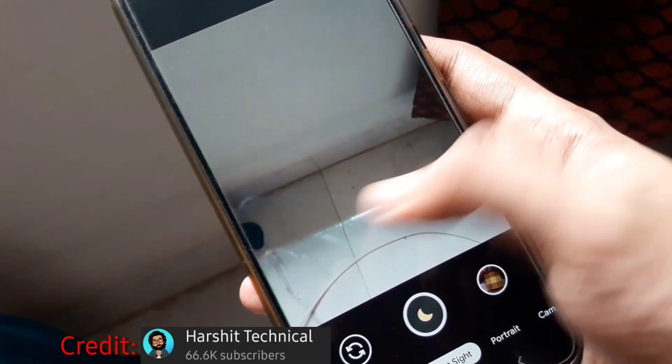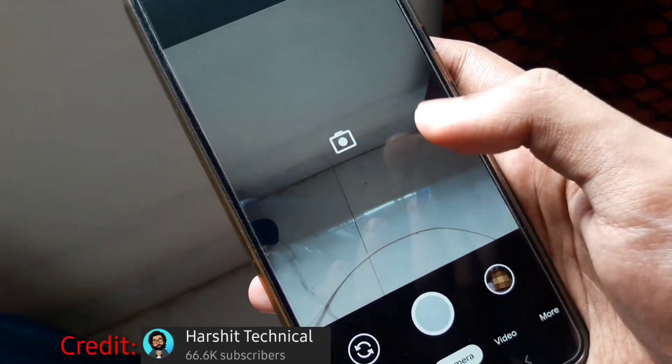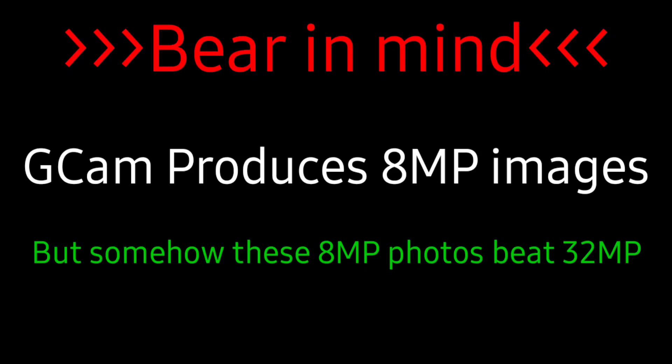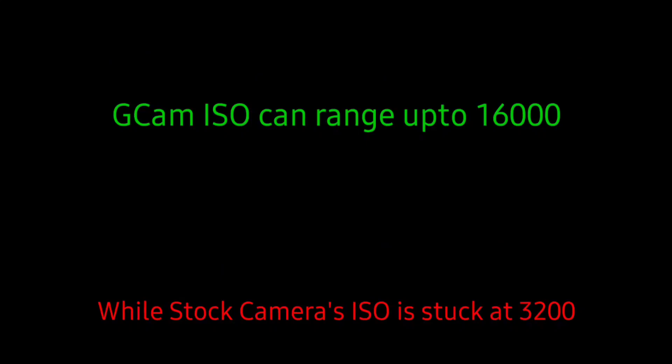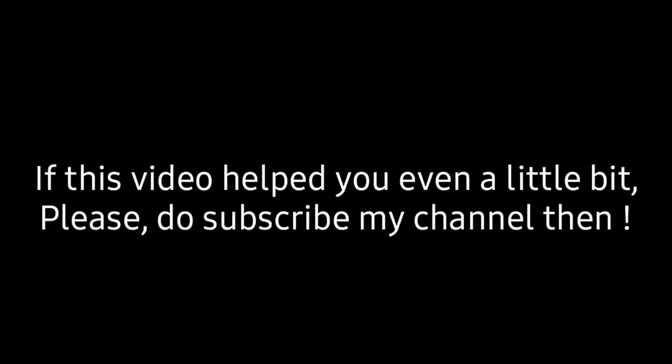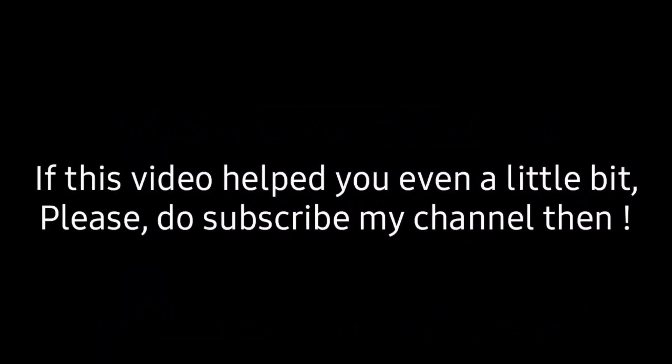You can also do video recording with this Gcam 7.3 version app. We have to keep in mind that Google Camera produces 8 megapixels of image, but this 8-megapixel image can sometimes surpass the 32-megapixel image of Samsung Galaxy A70. If this video helped you even a little bit, please do subscribe to my channel. May we meet again in the next episode, Inshallah. Thank you all.